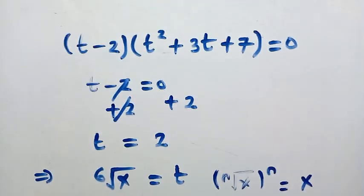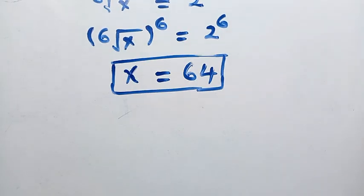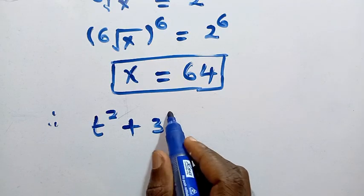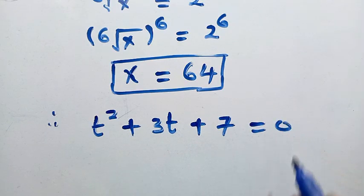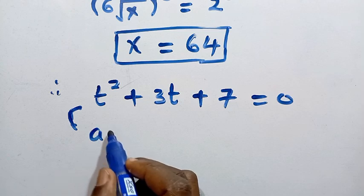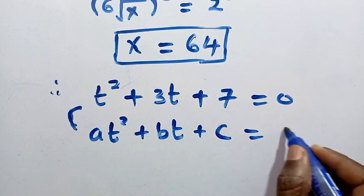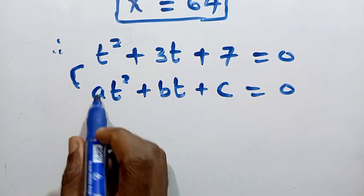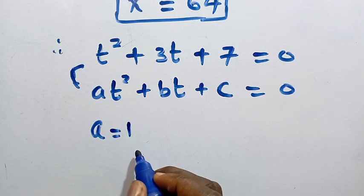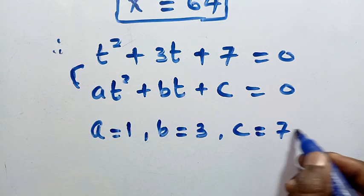Now considering the other factor, we set t squared plus 3t plus 7 equals 0. Comparing with the standard quadratic form at squared plus bt plus c equals 0, we identify a equals 1, b equals 3, and c equals 7.